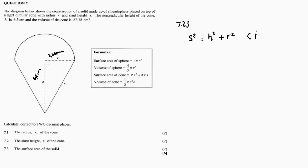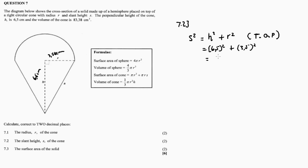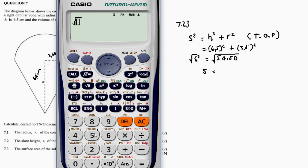By the Pythagorean theorem: s² = h² + r². Substituting: h = 6.5 squared plus r = 3.5 squared. Calculating 6.5² + 3.5² = 54.50. Taking the square root of both sides: s = √54.50.